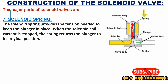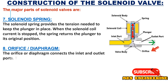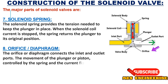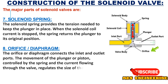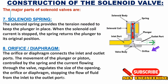The eighth part of the solenoid valve is the orifice or diaphragm. The orifice or diaphragm connects the inlet and outlet ports. The movement of the plunger or piston, controlled by the spring and the current flowing through the valve, regulates the size of the opening, stopping the flow of fluid from the inlet to the outlet ports.